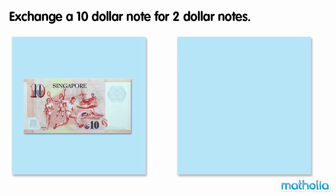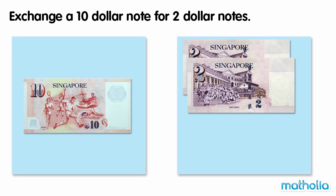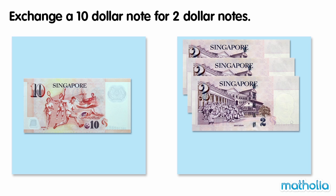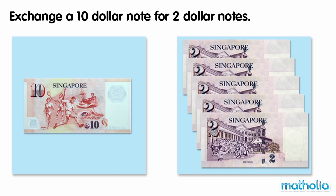Exchange a ten dollar note for two dollar notes. Ten is equal to two plus two plus two plus two plus two, so ten dollars is equal to five two dollar notes. We can exchange a ten dollar note for five two dollar notes.